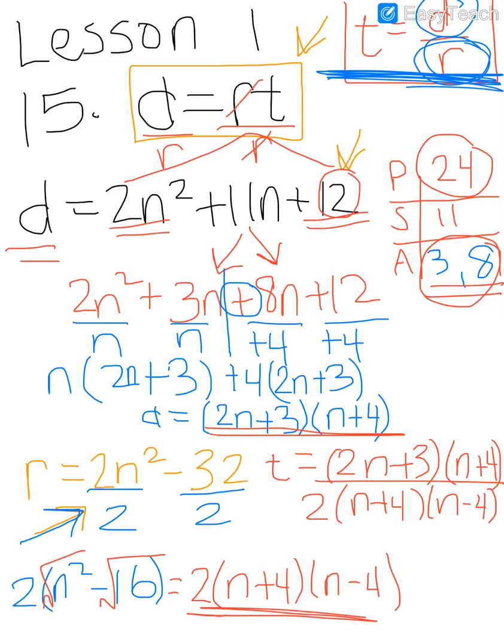What cancels from here? So once everything is factored, then you say, what can I cancel? So n plus 4 and n plus 4 cancel. And what we're left with is 2n plus 3 in my numerator. So what I'm going to do is I'm just going to erase this. So what we're left with for our simplified expression for time